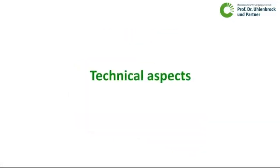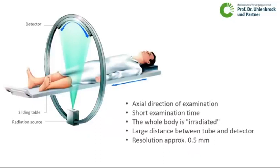What is the difference to a normal CT? If you look at a normal body CT scanner, we always examine the whole body in the axial direction. Therefore, the ring of detector and radiation source is quite wide — at least 70 to 80 cm is the distance between radiation source and detector.